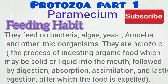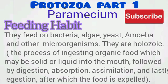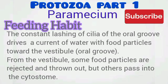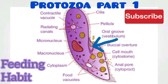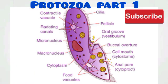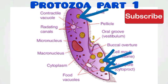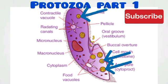Paramecium feeds on bacteria, yeast, amoeba, algae, and other paramecia. They carry out holozoic nutrition, taking in particulate organic matter. The constant lashing of cilia in the oral groove drives particulate matter along with water into the vestibule, then into the buccal cavity, where it passes into the cytostome or cell mouth. From the cytostome the food passes through the cytopharynx, where it is collected at the base into a membranous vesicle, which is then released into the cell as a food vacuole.